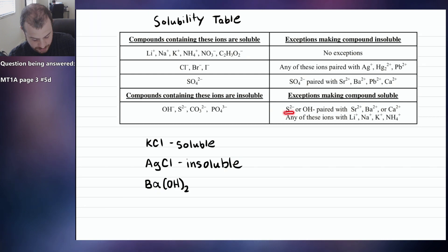It says S²⁻ or OH⁻. Oh, there's our OH⁻ paired with strontium, barium, or calcium. Oh, barium is an exception, making the compound soluble. So we were going to say this was insoluble because it had hydroxide, but barium is an exception making it soluble. So that means this is going to be soluble.